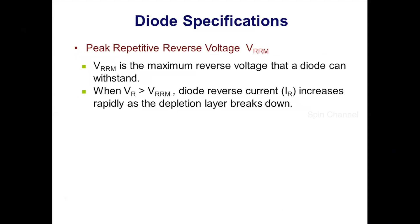The next is peak reverse voltage, also called peak repetitive reverse voltage or peak inverse voltage. This is the largest amount of reverse bias voltage the diode junction can withstand without damaging the junction. If the voltage exceeds this value, junction breakdown occurs, which usually destroys the diode.